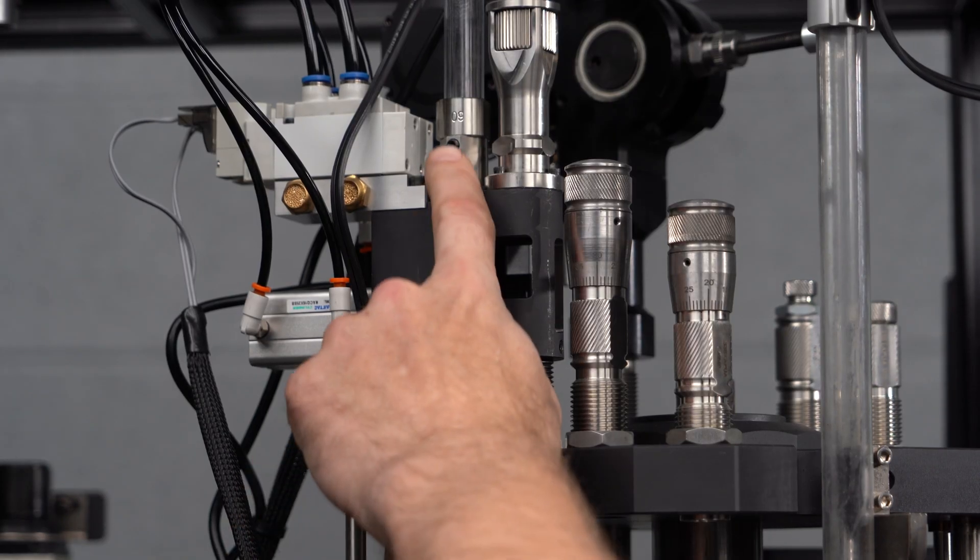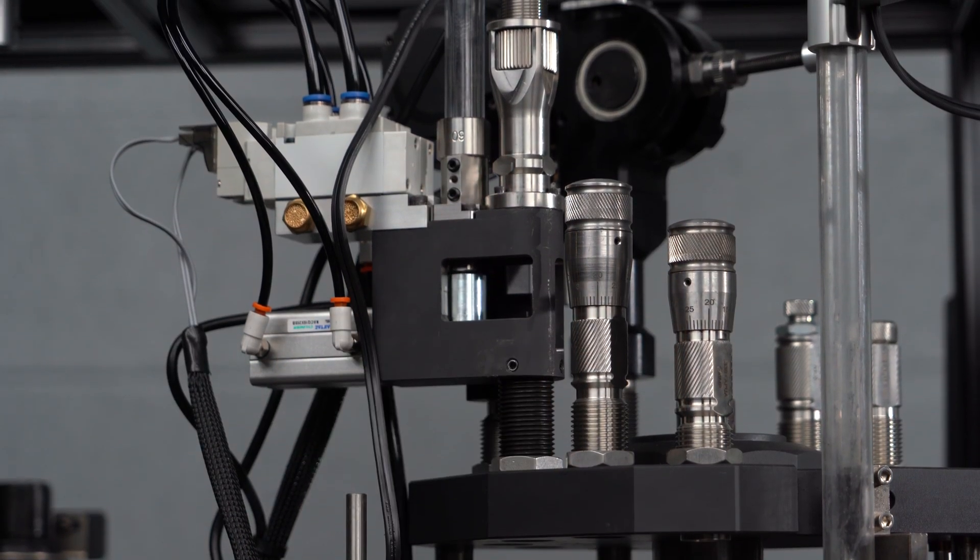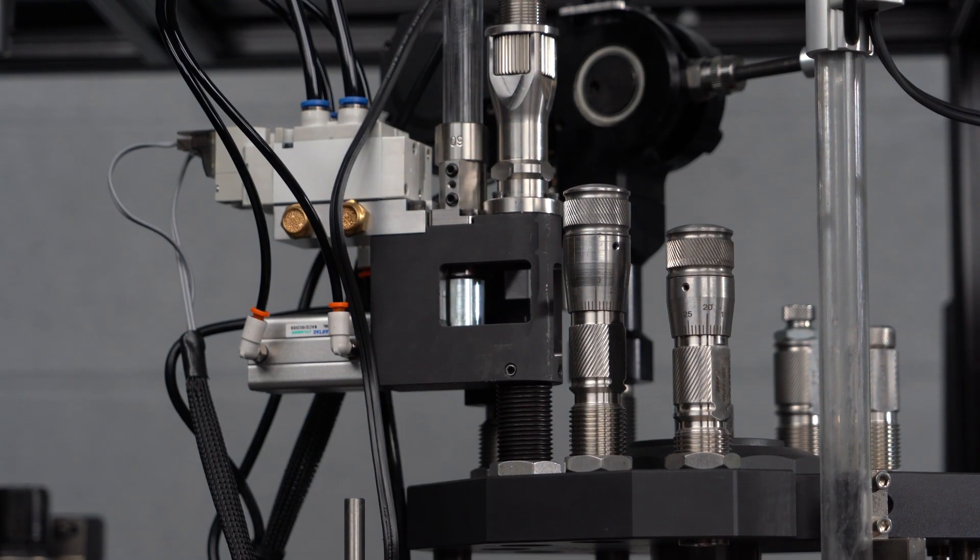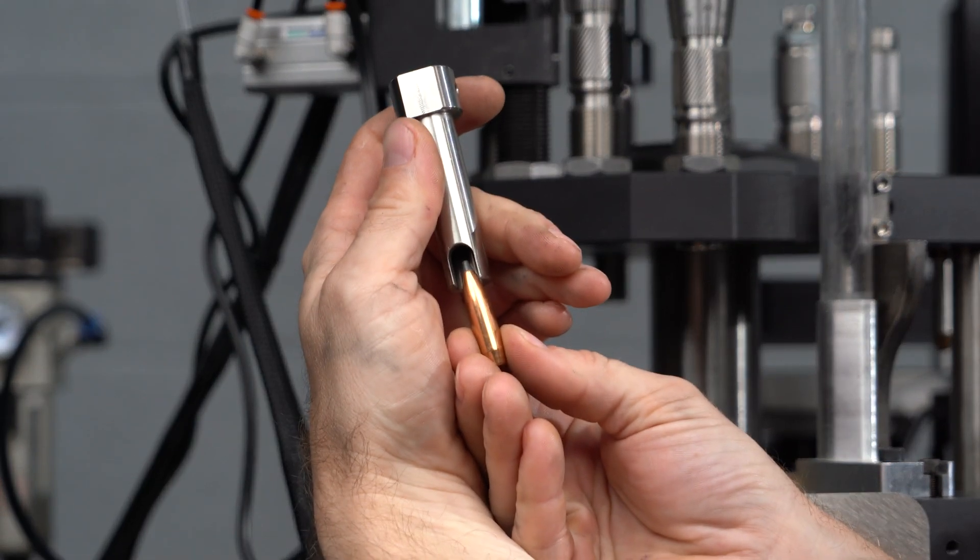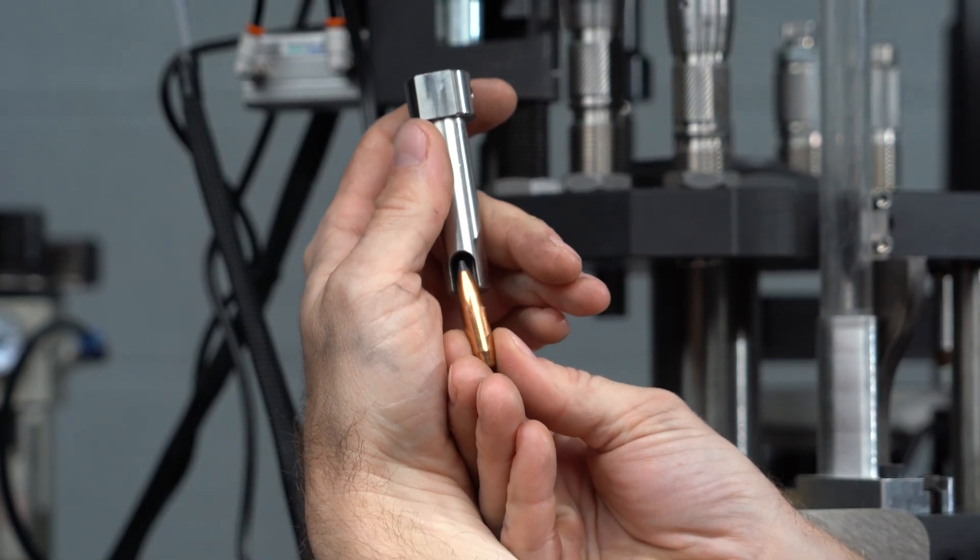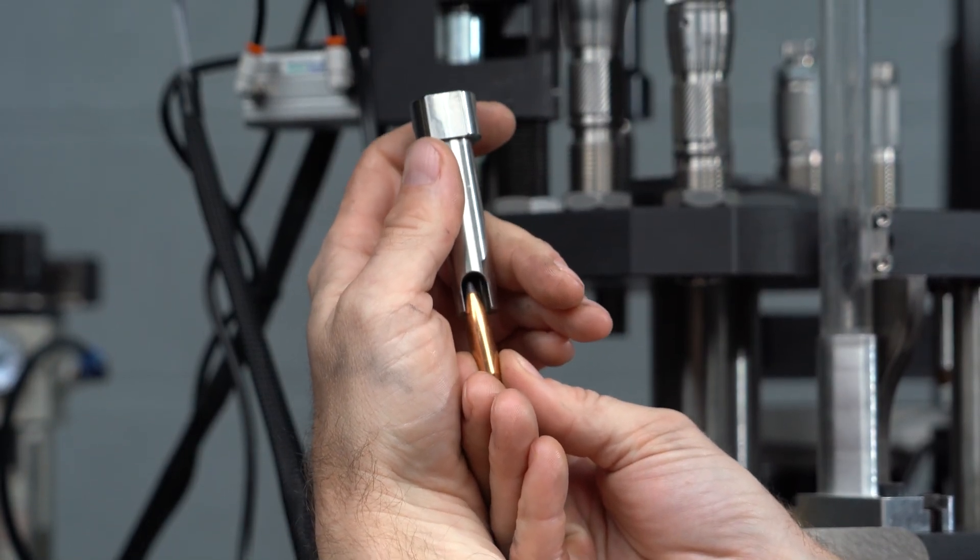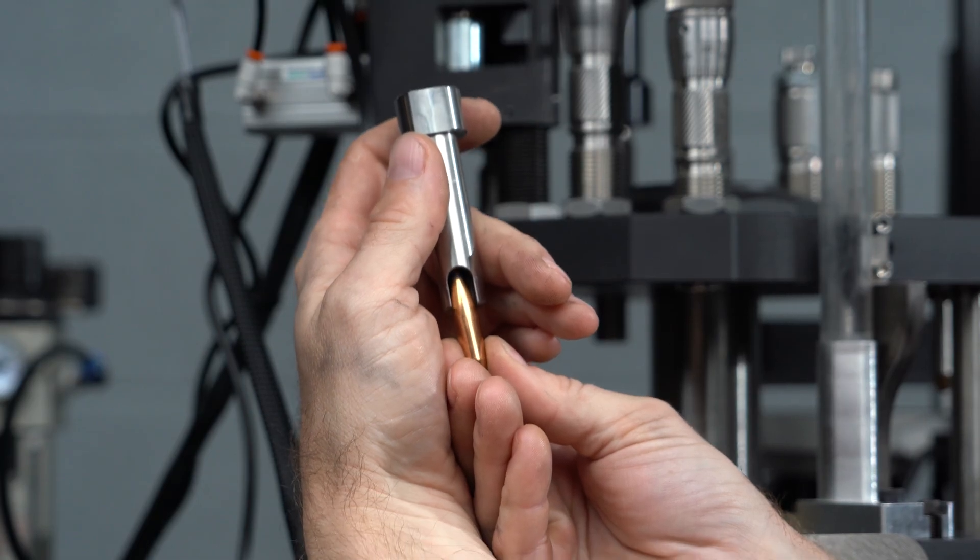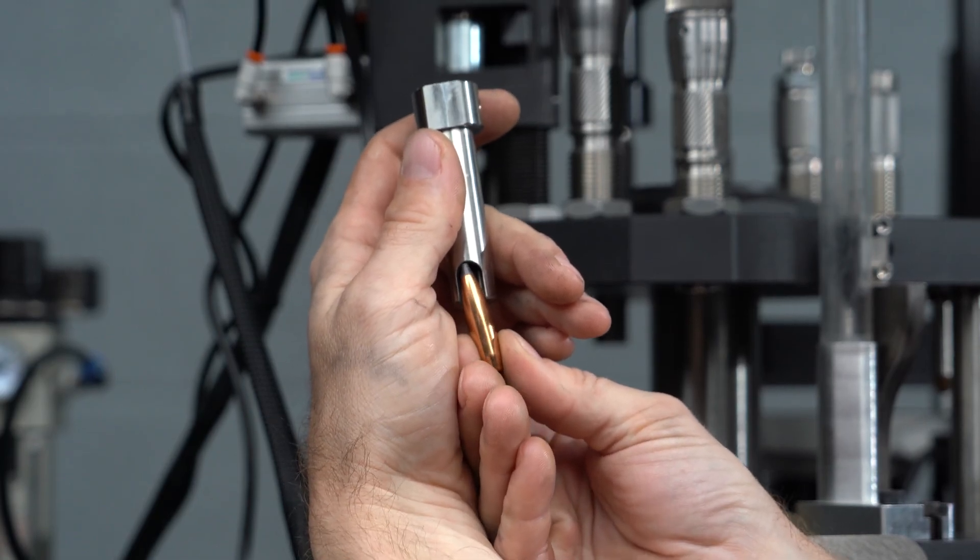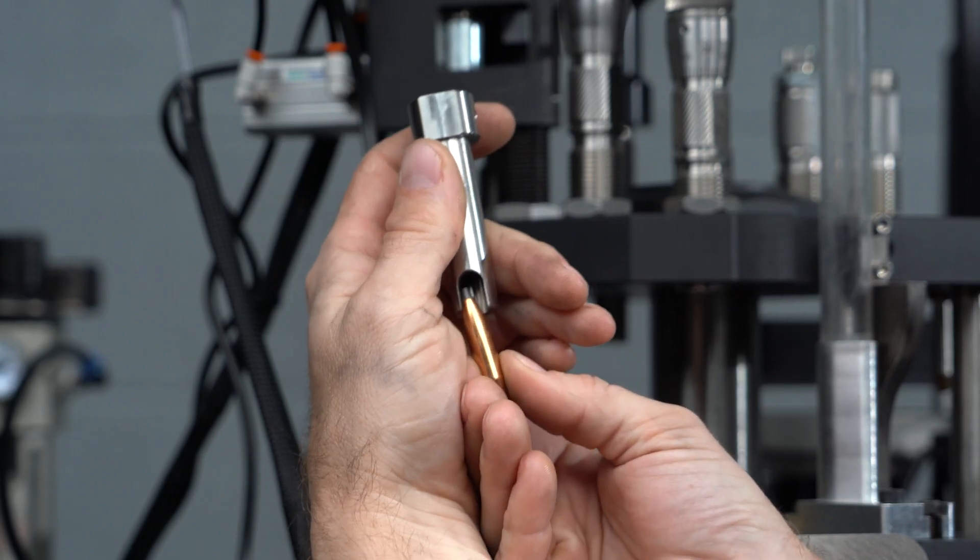First thing we're going to do is set our adapter height to match up with the projectile we're using. The adapter is used as a gate or guard to prevent the bullet above the projectile we're loading from sliding out. So the goal is to set our adapter height so that is as low as possible while still allowing clearance of our projectile to slide out through it.